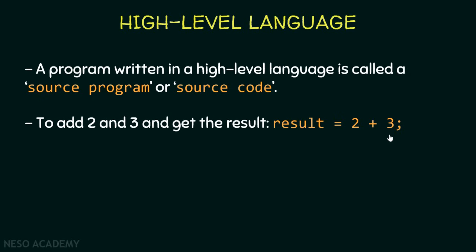For example, if we want to add two and three and get the result in Java, we write a statement that is very similar to mathematics — we are saying we want to store inside 'result' the answer of two plus three. Two plus three is calculated to get five, and five is stored in the variable 'result'. In programming, just like in mathematics, we have the concept of a variable. Notice how much easier this is than assembly and machine code. Also notice the semicolon — every statement should end with a semicolon.